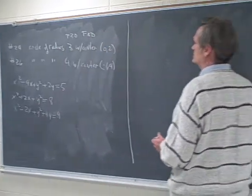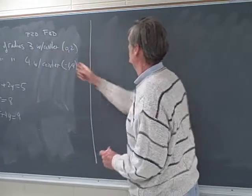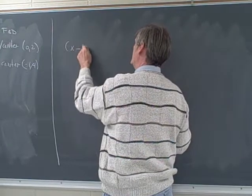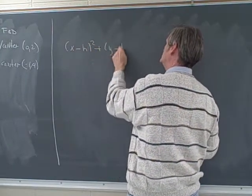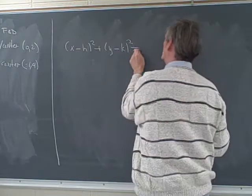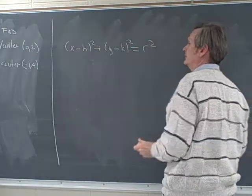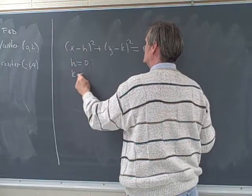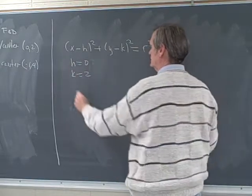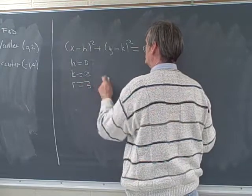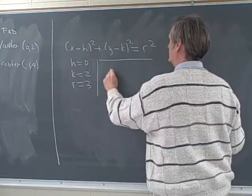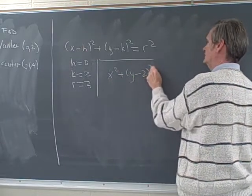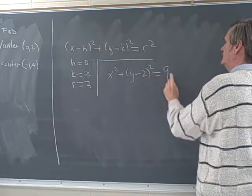In number 24, since we know the radius is 3 and we know the center, the form we're going to use is x minus h quantity squared plus y minus k quantity squared equals the radius squared. Here h equals 0, that's the x displacement, k equals 2, that's the y displacement, and the radius equals 3. So we write x squared plus y minus 2 quantity squared equals 3 squared, that's 9.